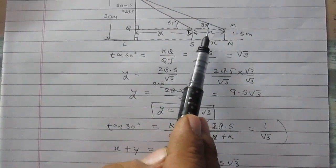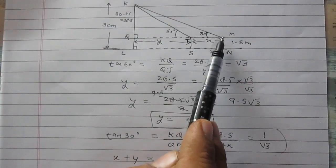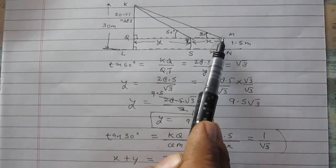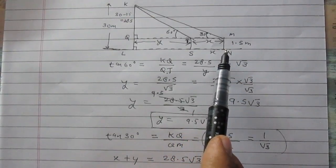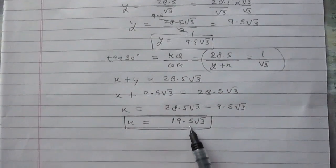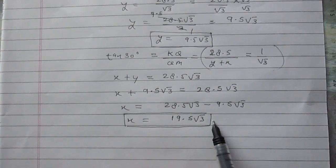Here we know that X represents the distance he walked. So we can see the boy has walked 19.5 square root 3 meters.